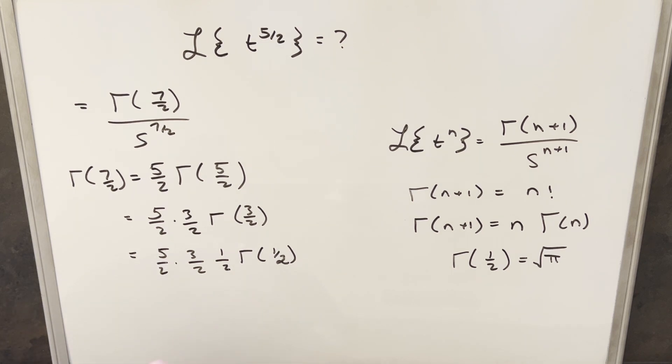But then at this point, I find it useful to memorize or have one value handy. So if we can just memorize this value of gamma of 1 half, and remember that it's the square root of pi, then you can just plug that in.